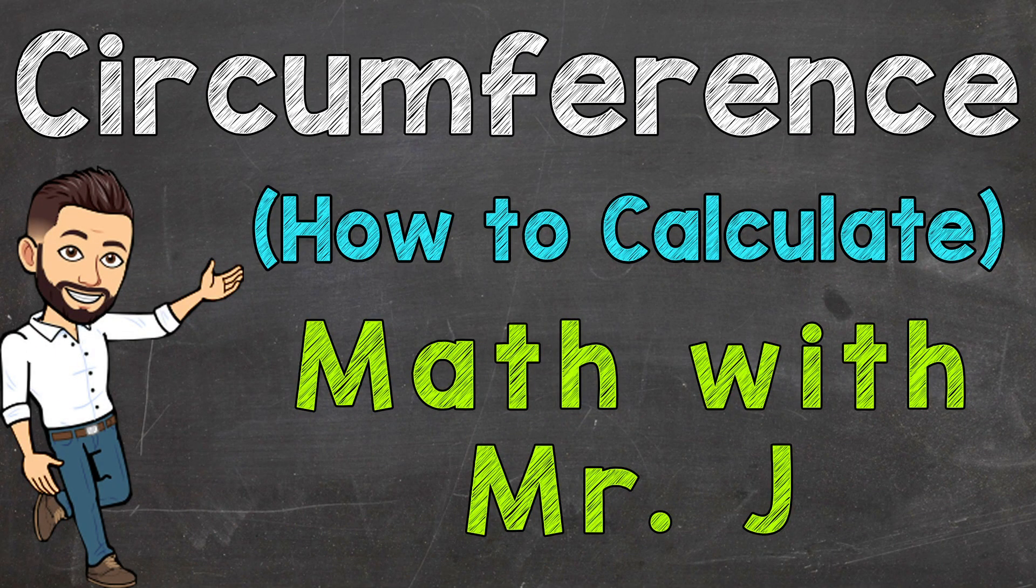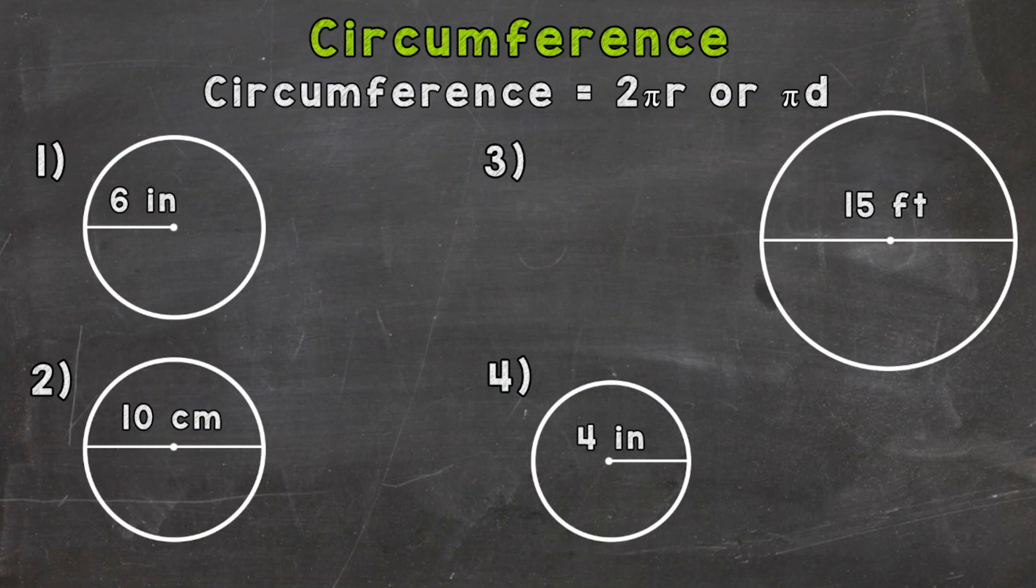Welcome to Math with Mr. J. In this video, we're going to discuss circumference. Circumference is the distance around a circle. As you can see, at the top of your screen in white, we have two formulas we can use: 2 times pi times r, which r stands for radius, or pi times d, where d stands for diameter. Again, circumference is the distance around the outside of a circle, so the perimeter of a circle.